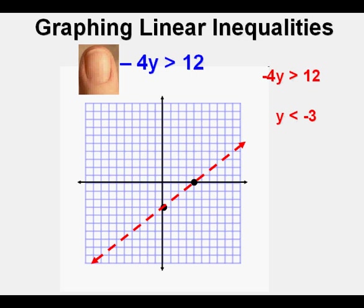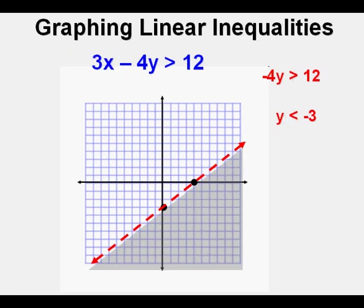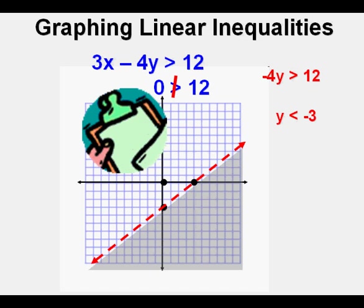We draw a dashed line using these two points. And since the sign is less than — y is less than negative 3 — less than means down or below, so we shade below the boundary line. This is the graph of 3x minus 4y is greater than 12. I believe in checking because it's easy to make a mistake with a sign. I like picking the point (0, 0) since the math is so easy. We substitute 0 for x and 0 for y, leaving us with 0 is greater than 12. Is 0 greater than 12? No. So the point (0, 0) is not in the solution set, confirming that we shaded below the line correctly. Check.